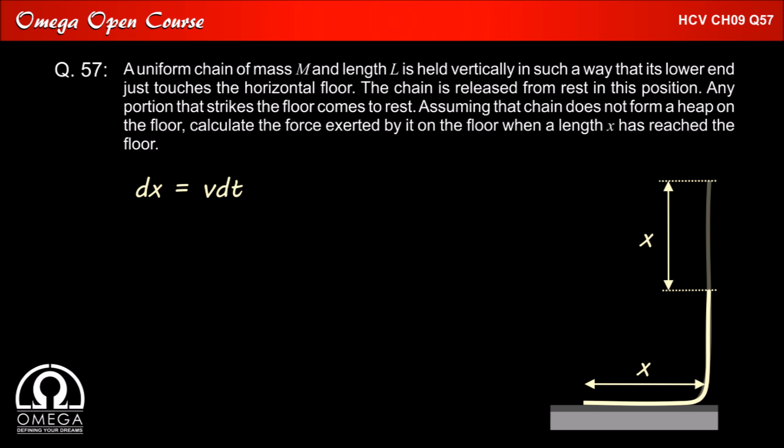Now let us take an infinitesimally small time interval dt. Since after falling distance X, the chain is moving with velocity v, the distance traveled by the chain in this interval, dx, is vdt. This is the length of the portion of the chain that will strike the floor in this dt interval. The mass of this dx length of chain is Mdx/L, which equals Mvdt/L. The momentum of this infinitesimally small portion, dP, is v·dm, that is Mv²dt/L.